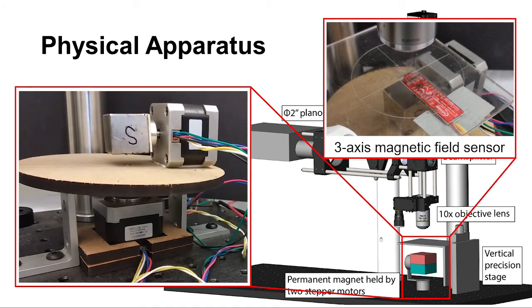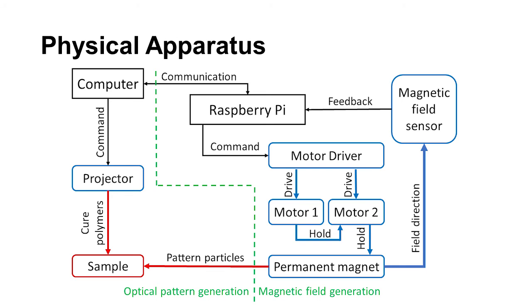With the feedback data from the sensor, we can control the direction of the magnetic field at the center of the precision stage. By synchronizing the UV module and the magnet module, we can automate the fabrication process.